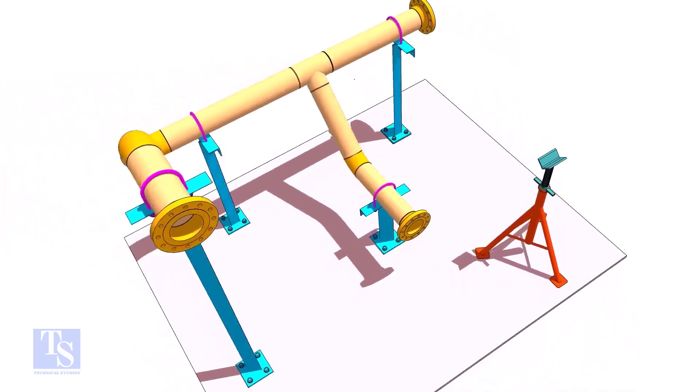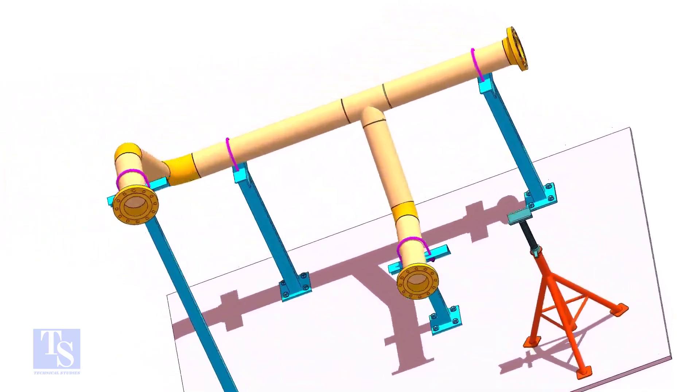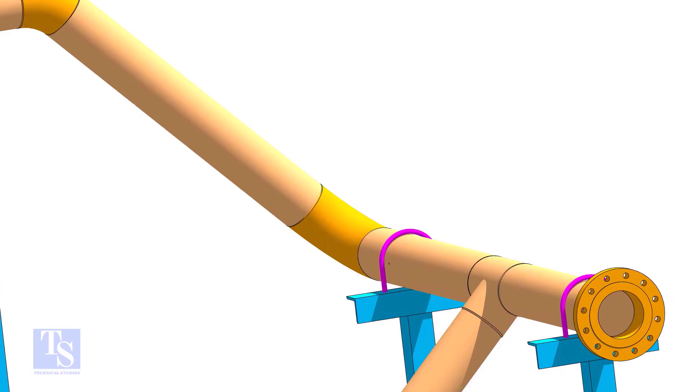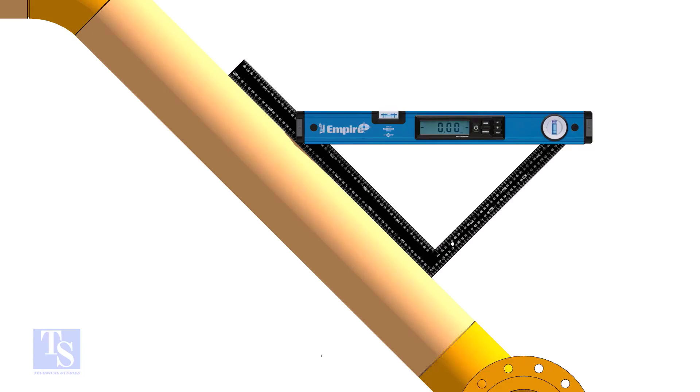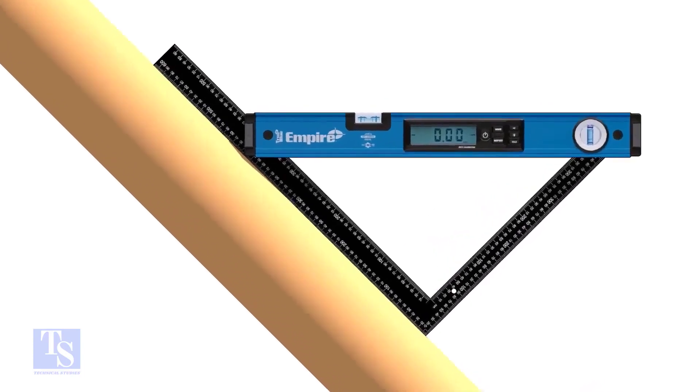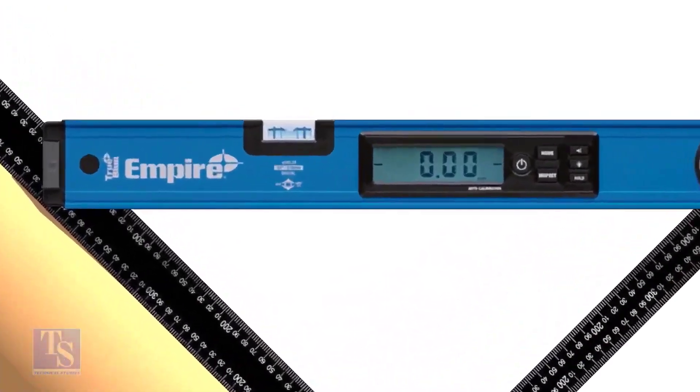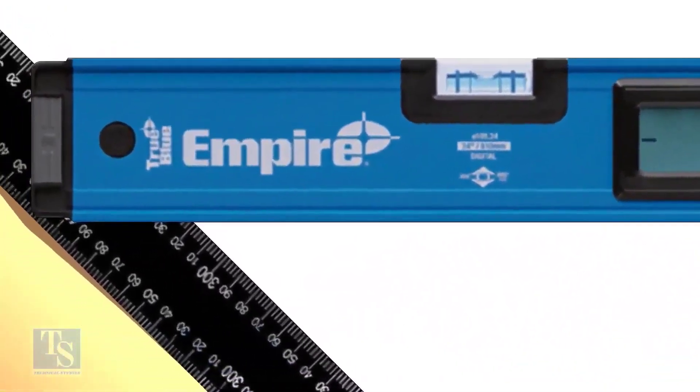Put a large set square or a right angle on the pipe as shown. Hold a spirit level at the right angle perfectly horizontal. Note down the reading where the spirit level edge touches the unit scale on the right angle.